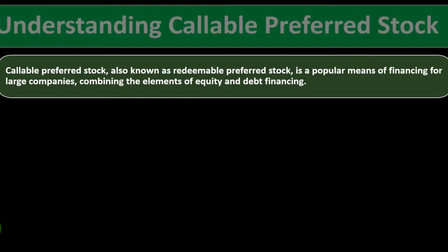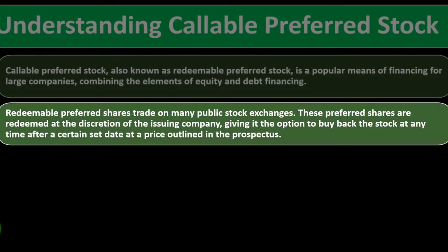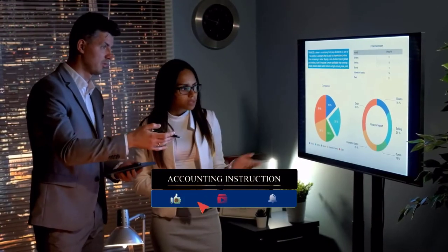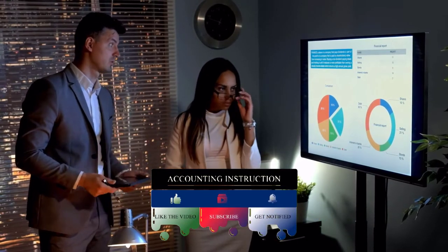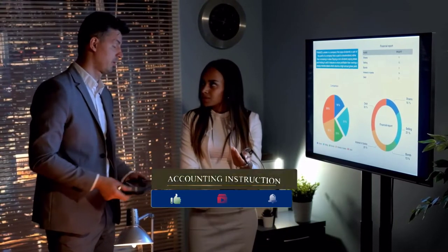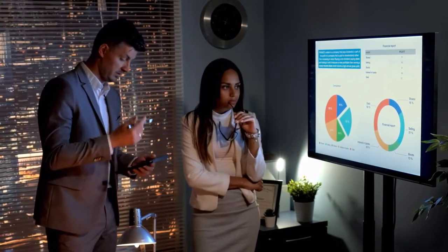Callable preferred stock, also known as redeemable preferred stock, is a popular means of financing for large companies, combining elements of equity and debt financing. Redeemable preferred shares trade on many public stock exchanges and are redeemed at the discretion of the issuing company, giving it the option to buy back the stock at any time after a certain set date at a price outlined in the prospectus. By issuing preferred stock, a company is essentially financing itself to invest in equipment, buildings, and growth.